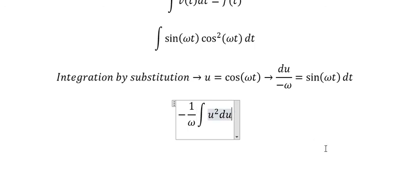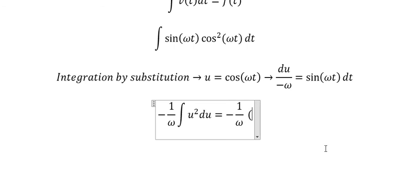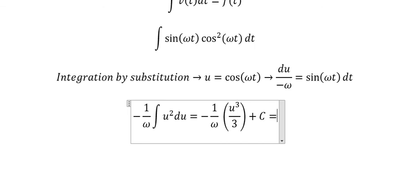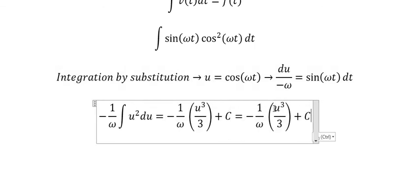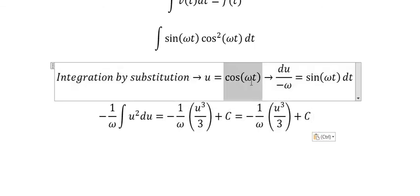This gives us −(1/ω) ∫u² du = −(1/ω)(u³/3) + C. Now we substitute back for u = cos(ωt).